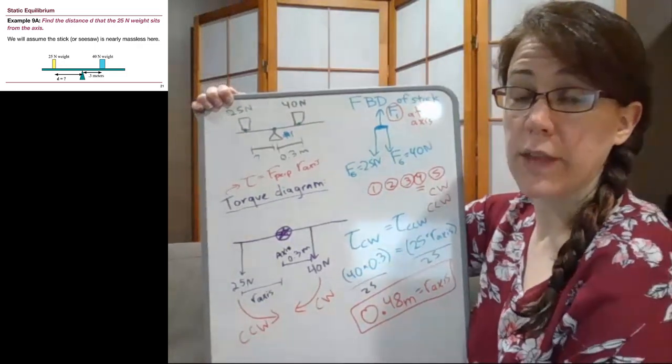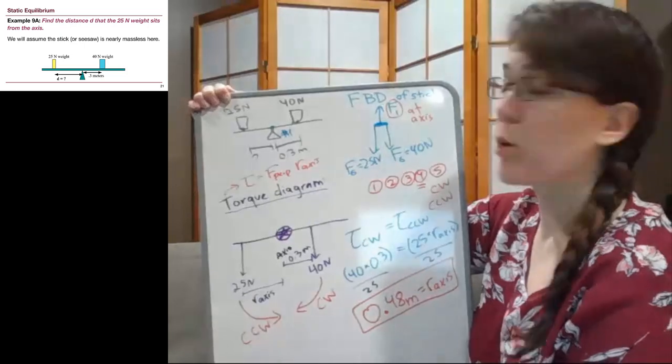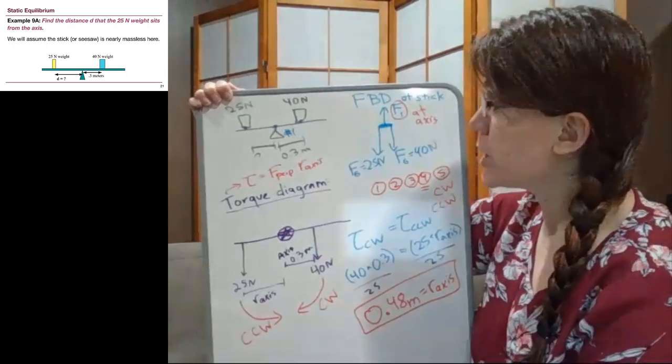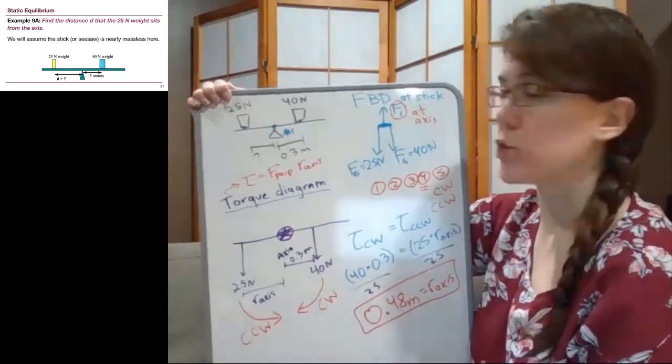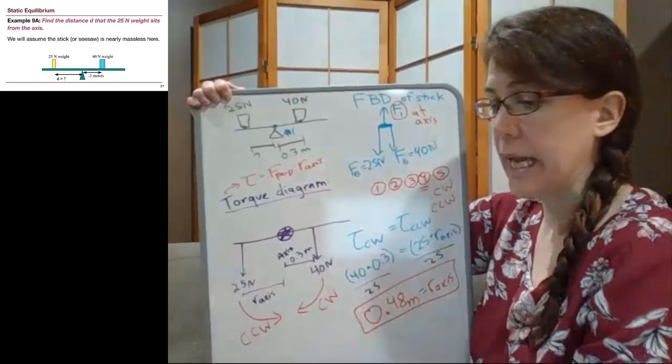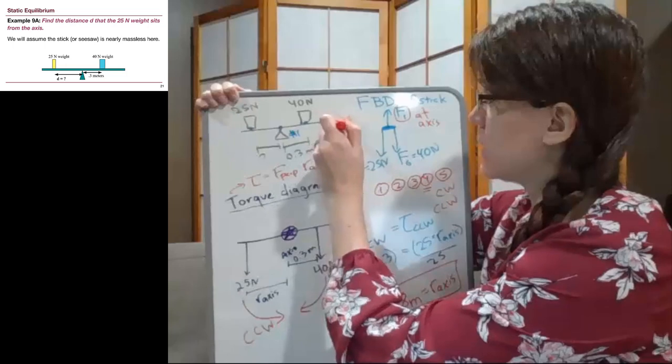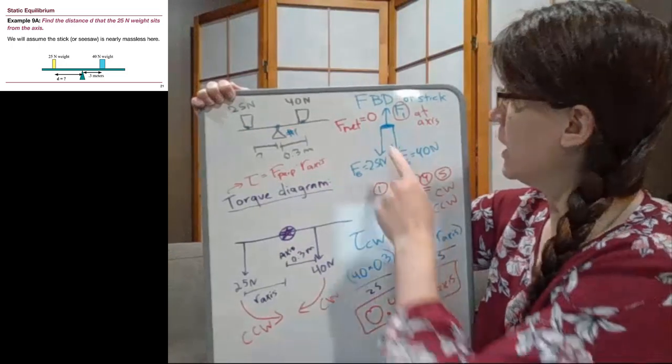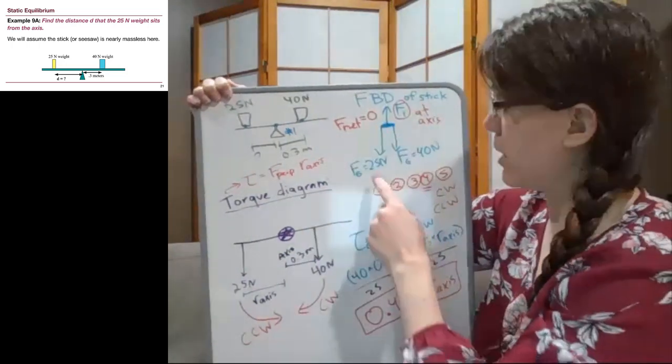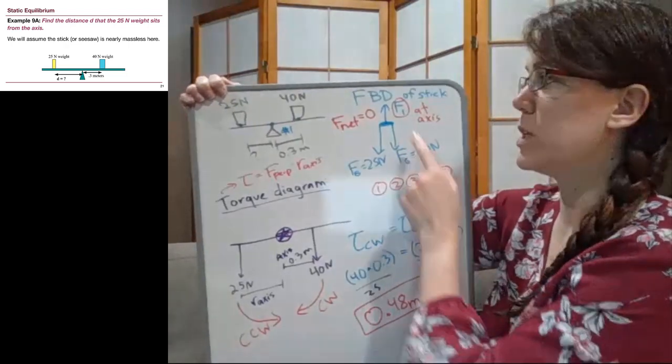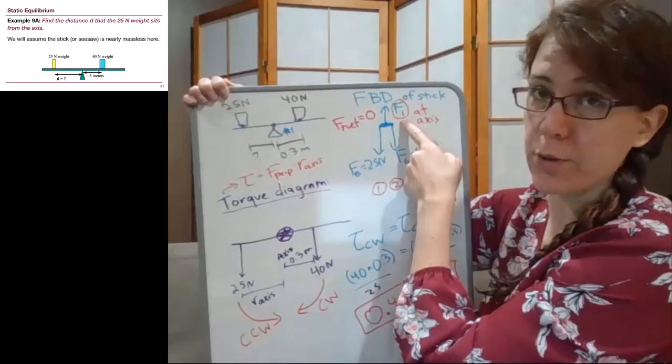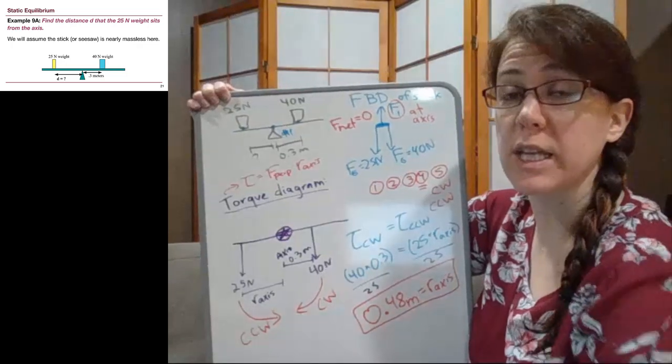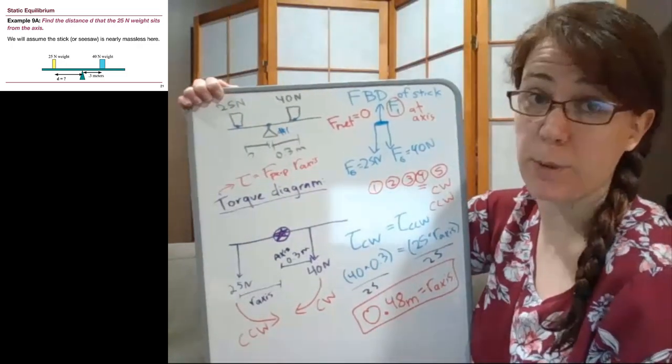That's all that this example asked for. The one thing I will note is that a lot of our examples will also ask for the forces at the supports. For this problem, that wouldn't have actually required us to do anything with torque, because if we look back at our forces, and this idea that the net force has to equal zero, that's the other requirement for torque, then we would see that this F1, the force pushing up, has to balance the 25 newtons and the 40 newtons. And so that F1 would be 65 newtons, 25 plus 40. So that wasn't an interesting question to ask about, but we will see that example show up in future example problems.